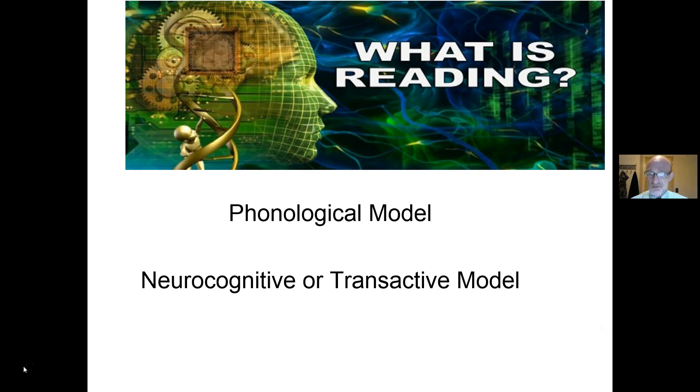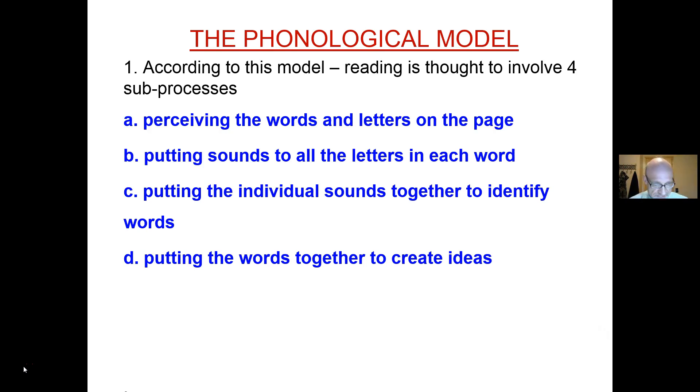Two models: the phonological model and the neurocognitive or transactive model. According to the phonological model, reading is thought to involve four sub-processes: perceiving the words and letters on the page, putting sounds to all the letters in each word, putting the individual sounds together to identify words, and putting the words together to create ideas.